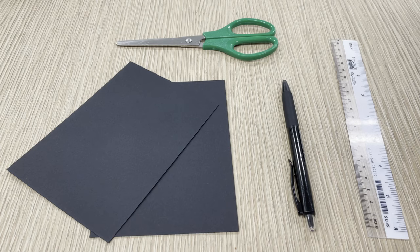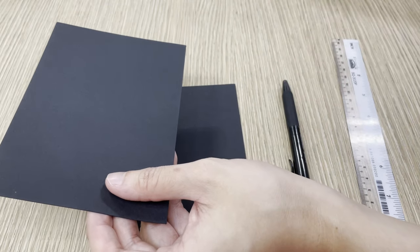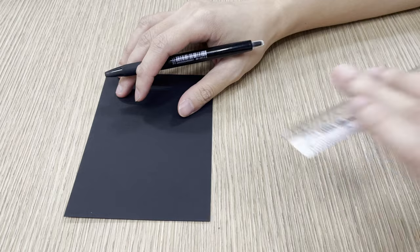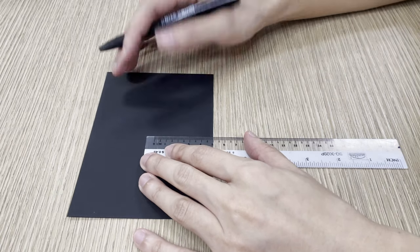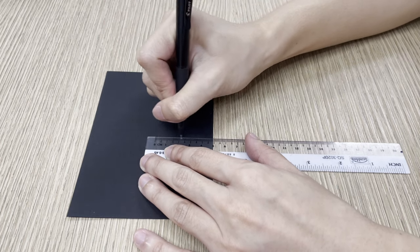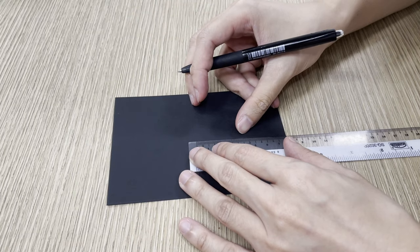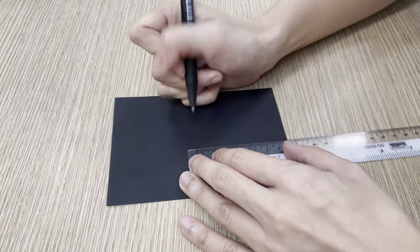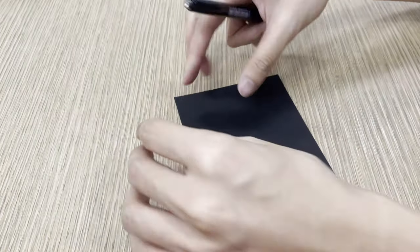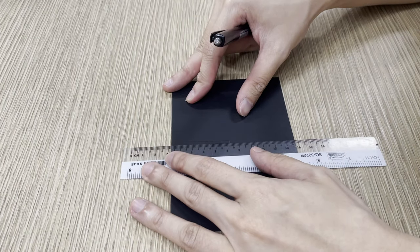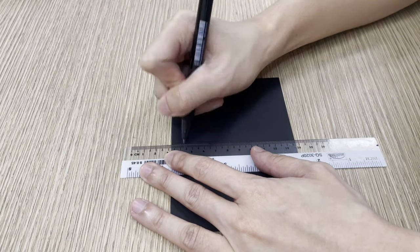For the first step of this experiment, we will be cutting out slots on our pieces of paper. First, pick up your ruler and pen, and measure a 5cm line from the middle of one of our pieces of paper. Then, draw a 2mm line across to get an L shape. Finally, draw another 5cm line to close up the gap. This is the slot that we are going to cut out from our paper.